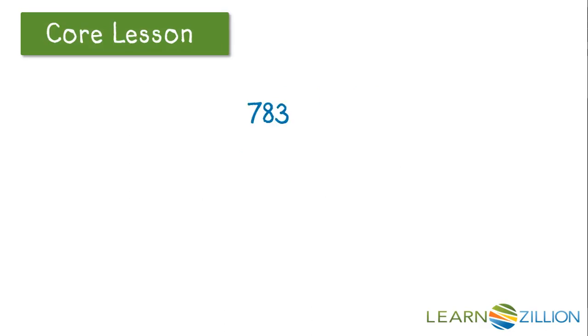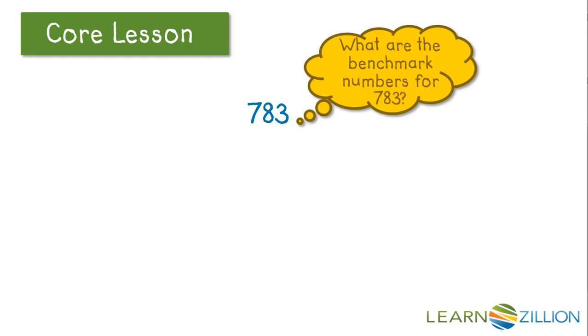Let's look at the number 783. What are the benchmark numbers for 783? There are several different options. First, let's focus on the 100's. If we focus on the 100's, we know that 783 is between 700 and 800. 700 and 800 would be the benchmark numbers if we focus on the 100's.